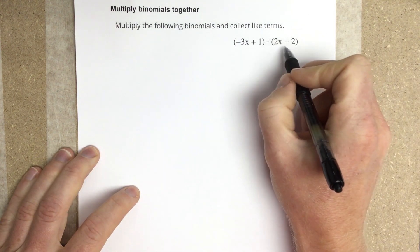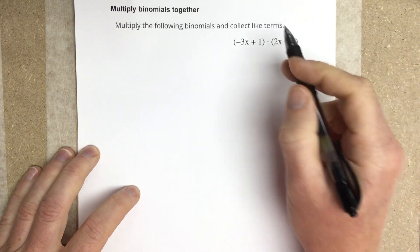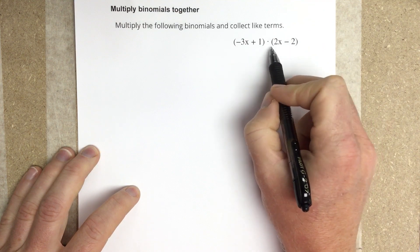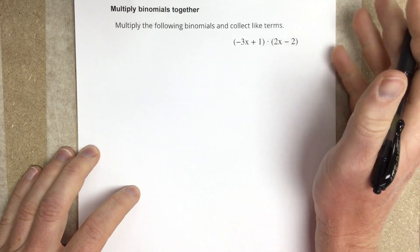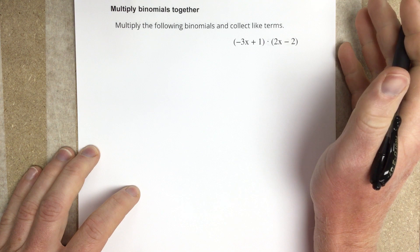So we have two binomials, we're multiplying them. Anytime we have two binomials and we're multiplying them together, we're actually going to have four multiplications that we have to do.